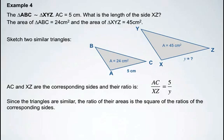Since these triangles are similar, we know that the ratio of their areas is equal to the square of the ratios of their corresponding sides. So we'll set up this ratio. The ratio of the area of triangle ABC to triangle XYZ is going to be the square of the ratio of the corresponding sides.